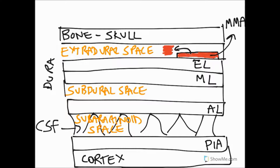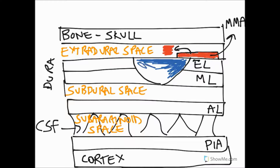If that doesn't happen, the person suffering from this trauma can eventually go into a coma and die. Moving on, we need to look at the endosteal layer and the meningeal layer of the dura — these two layers separate at various points around the skull to form what we call venous sinuses, which are full of venous blood, represented here in blue.